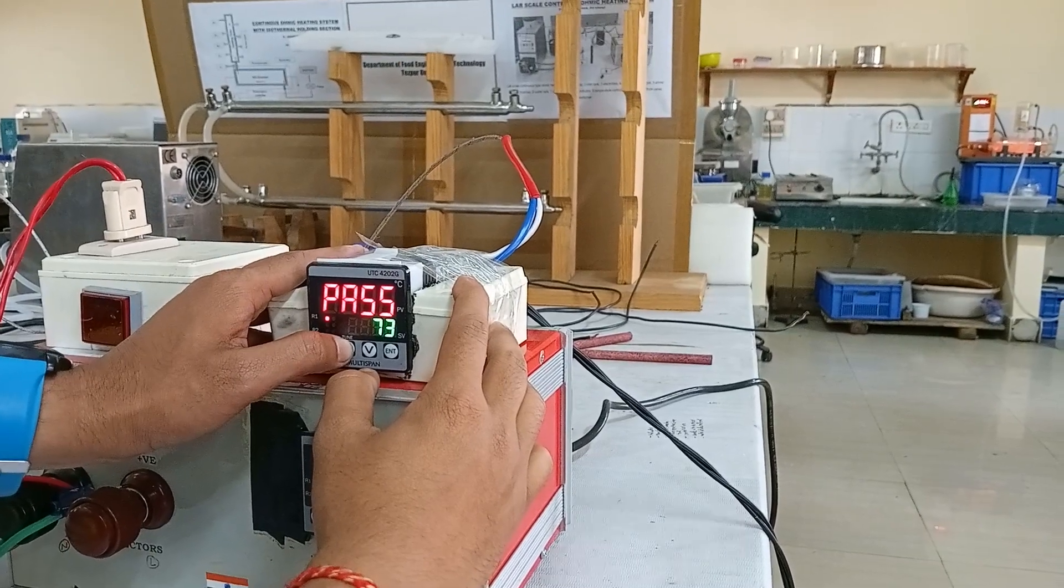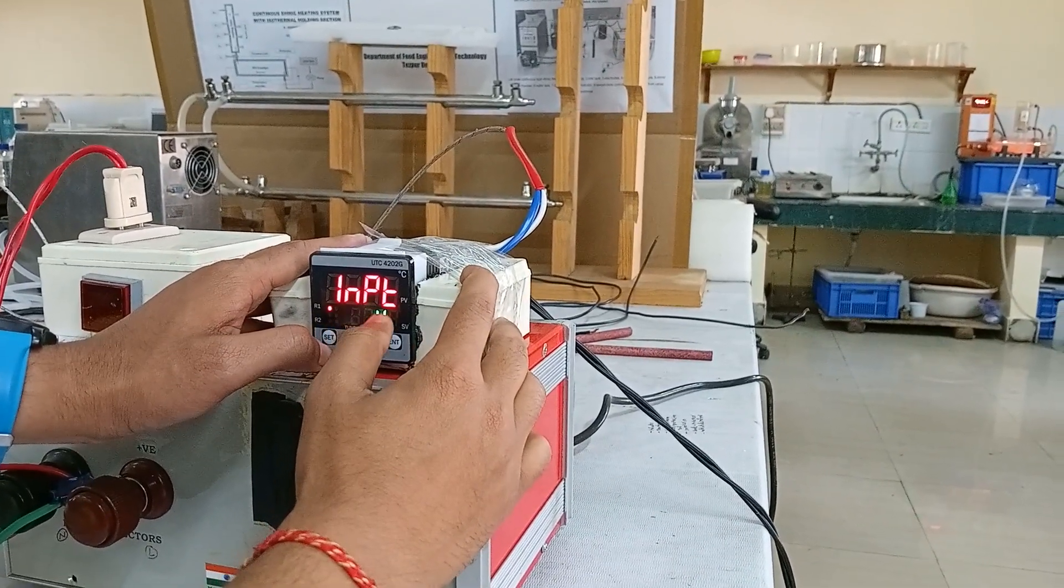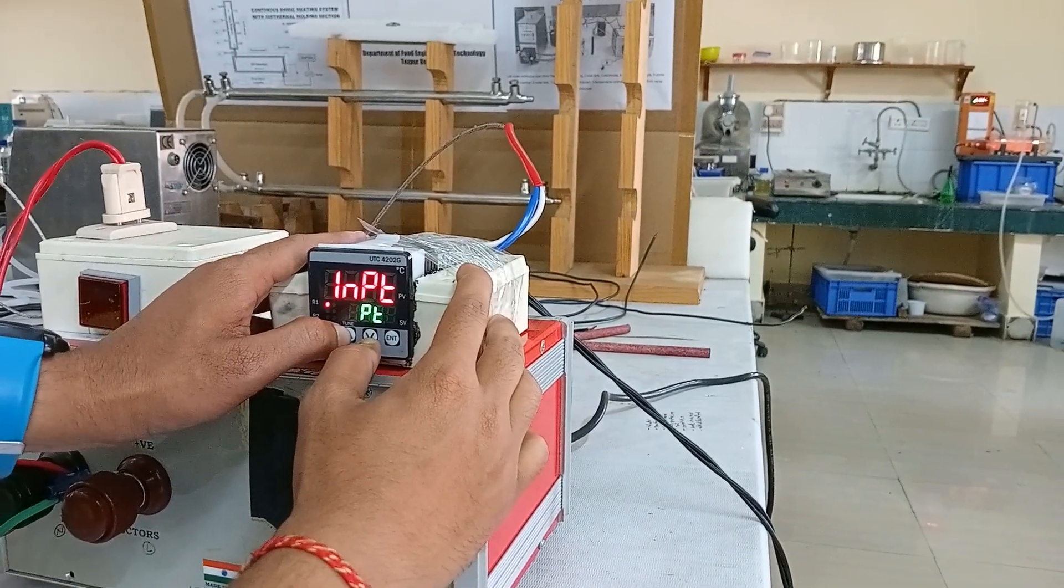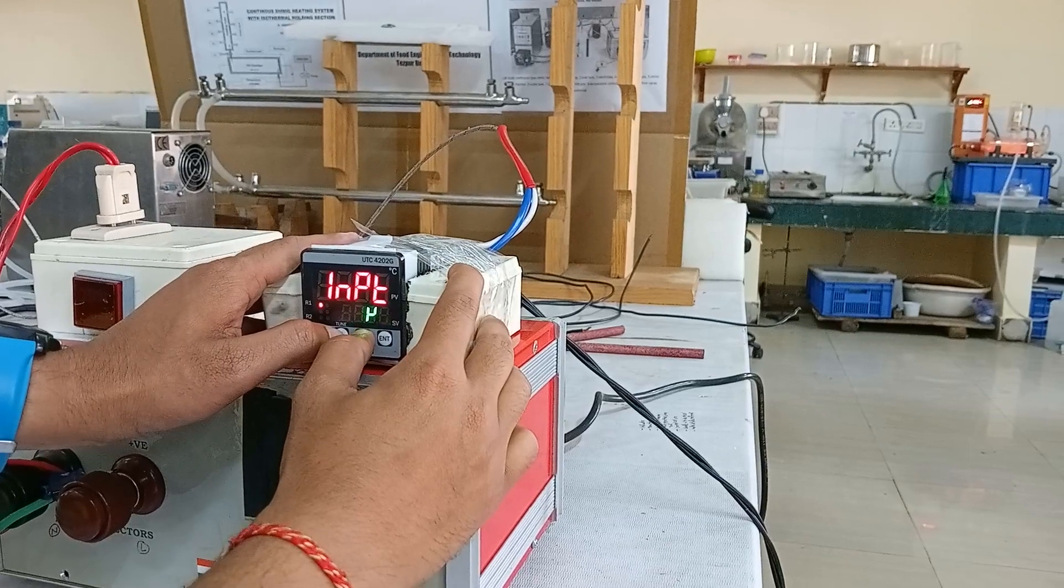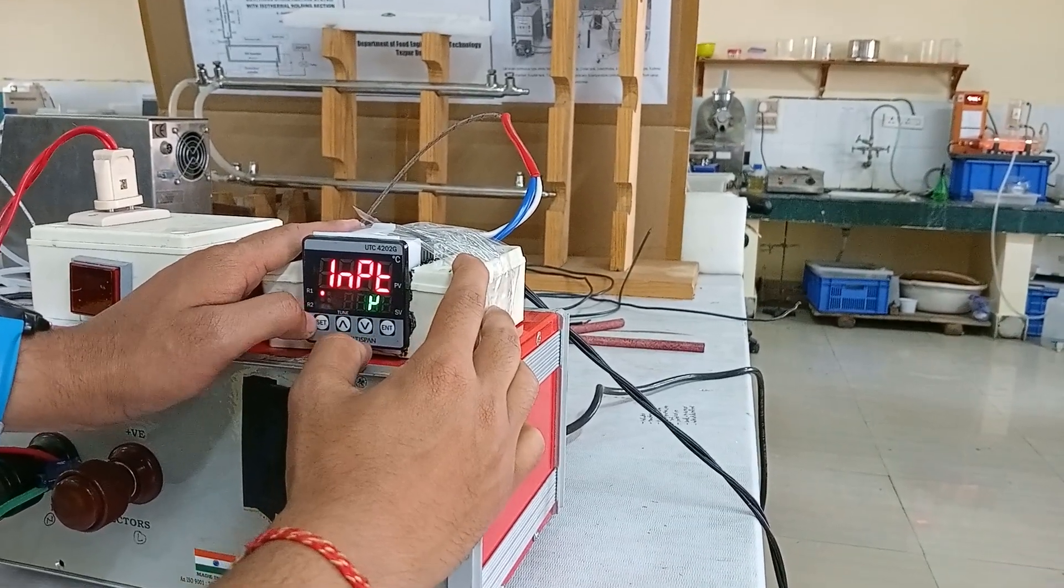After entering 73, click on set. Here we can see it is already set to K-type. We can change it using the upper and lower buttons. J-type is also available. I will keep it at K-type.